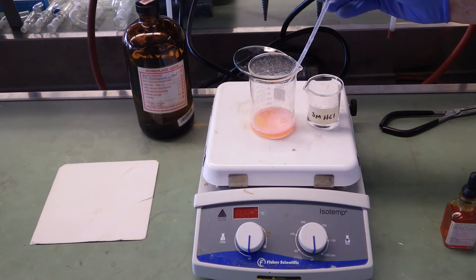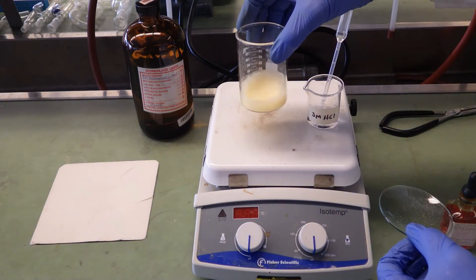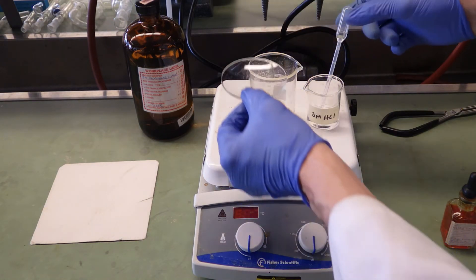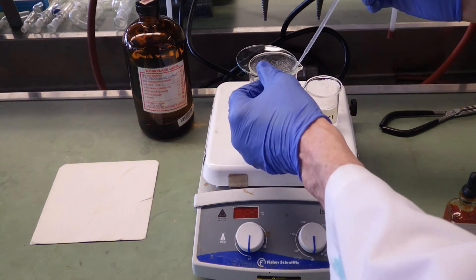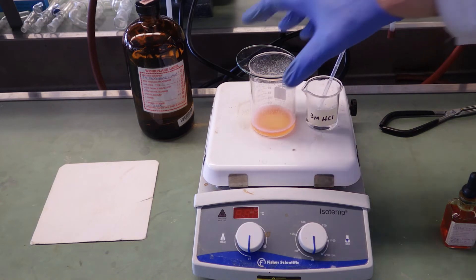And we see the localized red color formation as the acid hits the indicator. But when you mix it, the color reverts to yellow, indicating that sodium bicarbonate is still present in excess.